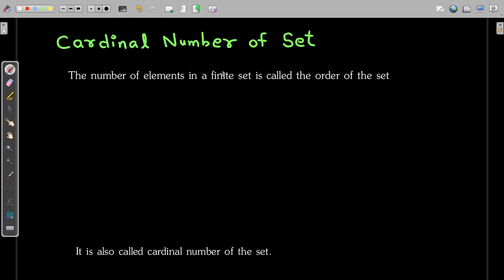Now, let us discuss about cardinal number of a set. What is it? The number of elements that are present in a finite set is called the cardinal number of set or order of the set. Either you say order of set or you say cardinal number of the set. Both of these terms are the same thing.